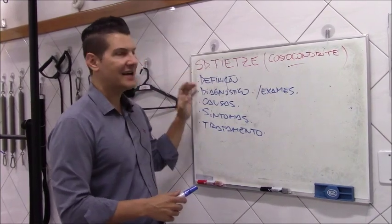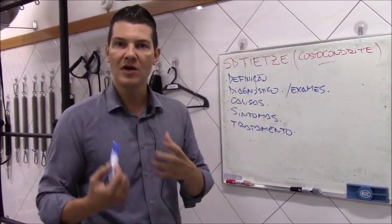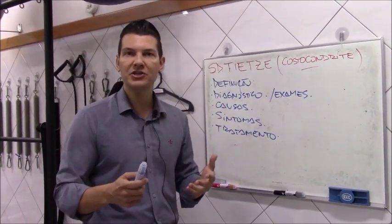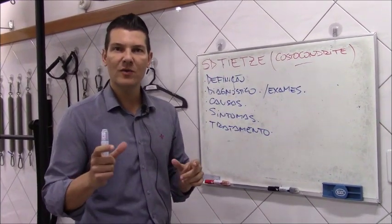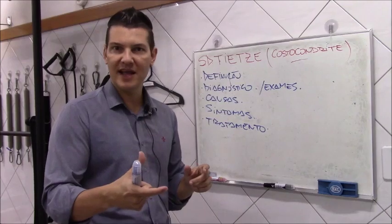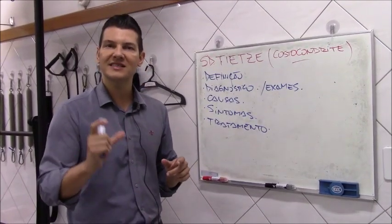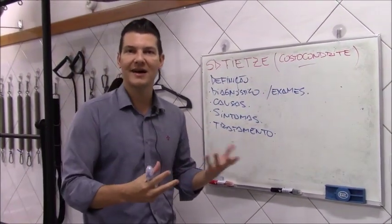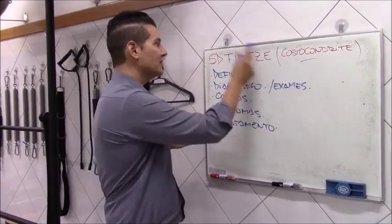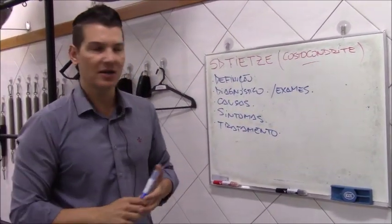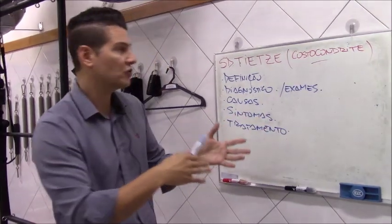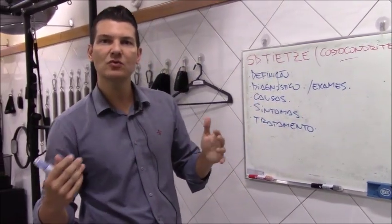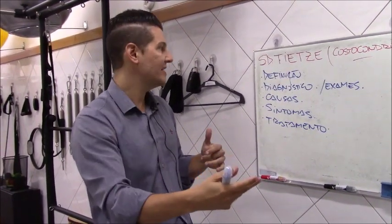Ela é caracterizada por uma inflamação local causando um edema nessa região. É muito comum ter uma predominância maior na ligação entre a segunda costela e o esterno e também da terceira costela com o esterno. A inflamação nessa região associada a um edema local é denominada como síndrome de Tietze, similar a uma costocondrite, mas com preferência pela segunda e terceira costelas.